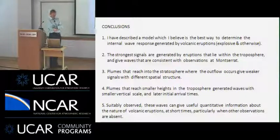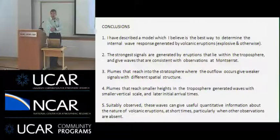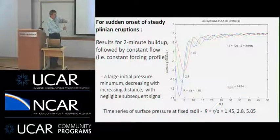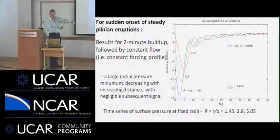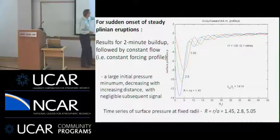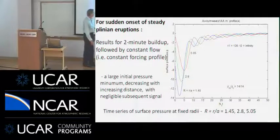Do we have any further questions? In the case of a continuous eruption, you showed that the pressure signal flattens out — can you give us a little more insight as to why? Is it cancellation of different waves? Well, you just give it a push and nothing else — it keeps on pushing but it doesn't change. If there's no change, there's no wave generation. It's only the time dependence of the eruption that generates waves. This wave propagates out and as it goes it's decreasing because it's leaking energy upwards and spreading out radially — that's the reason for the decrease with distance.